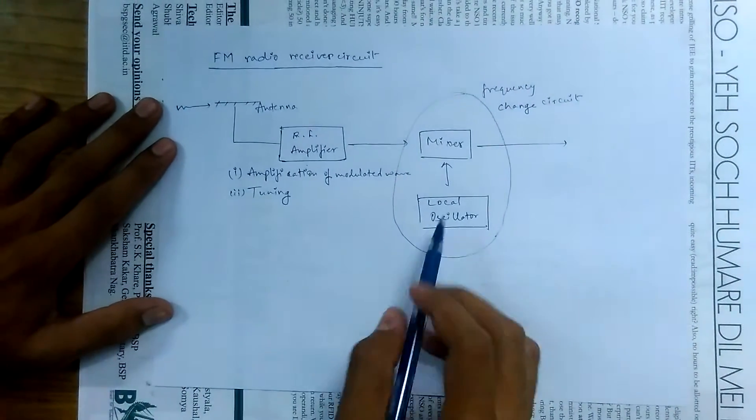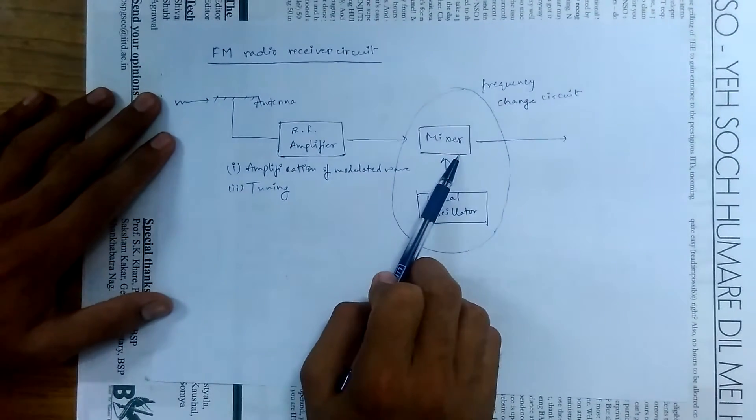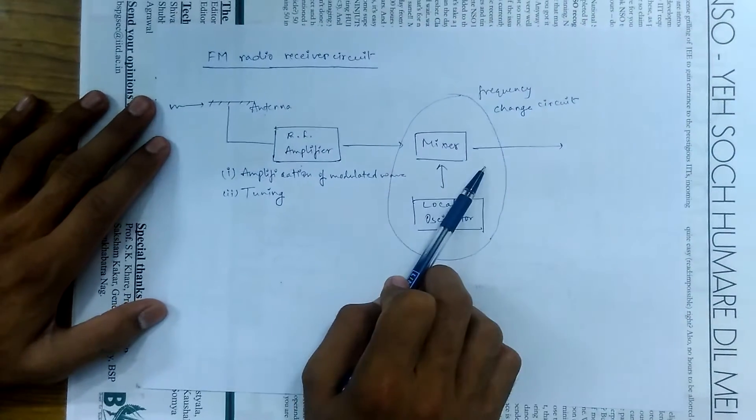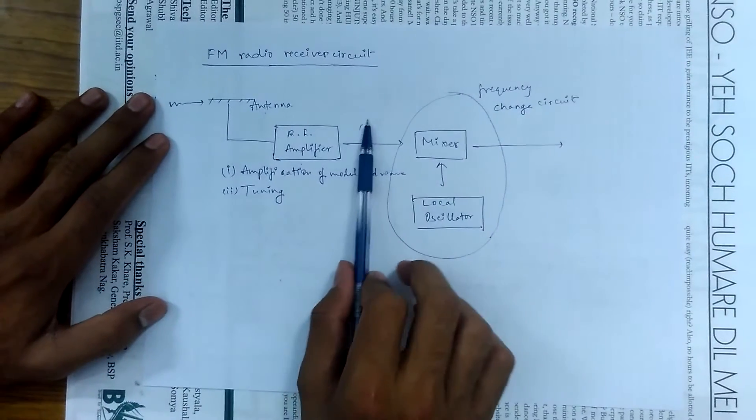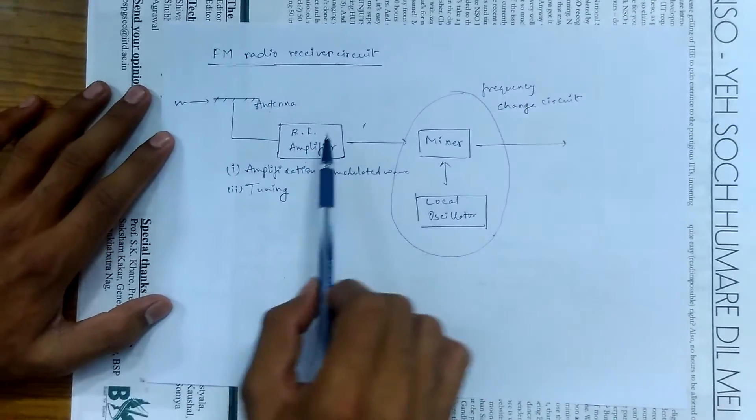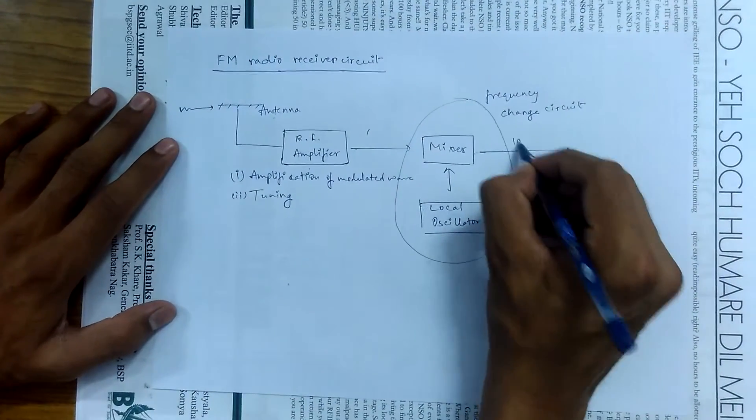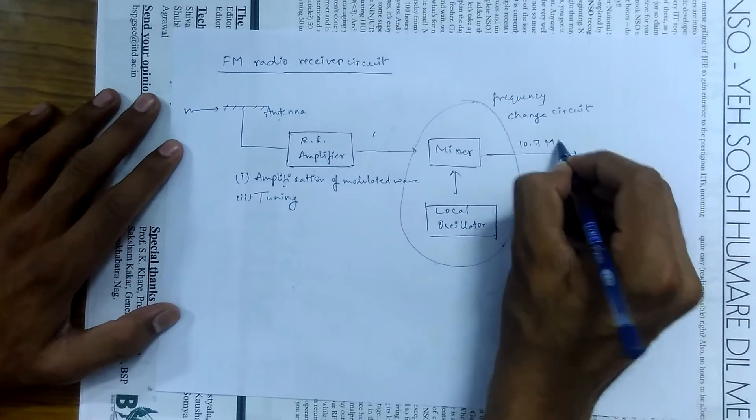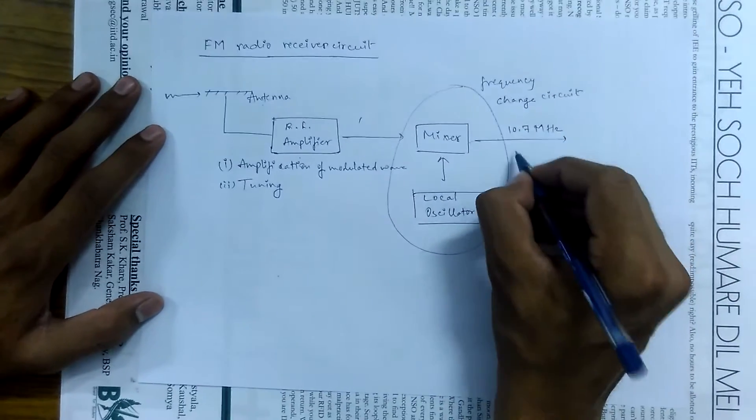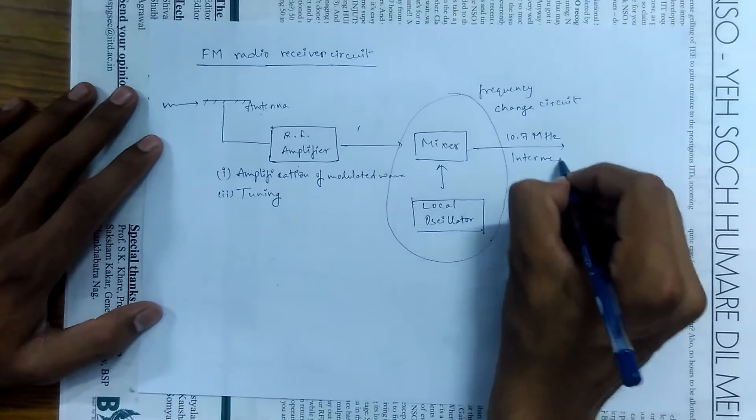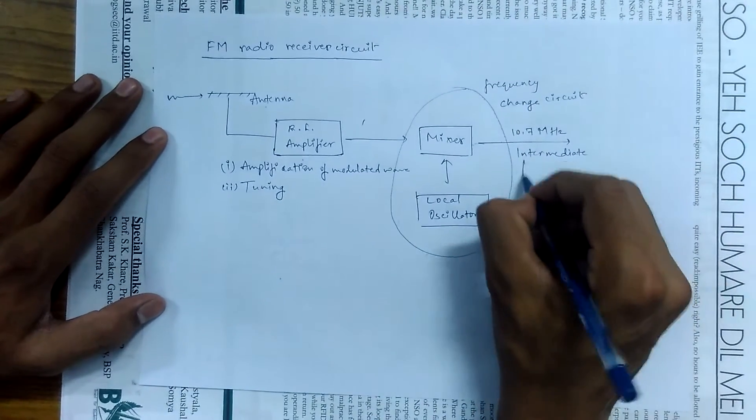Frequency change circuit. As the name suggests, here the frequency of our modulated wave changes. No matter what was the frequency of our received signal, when it comes out of the mixer, its frequency becomes equal to 10.7 MHz. And this frequency is also called the intermediate frequency.